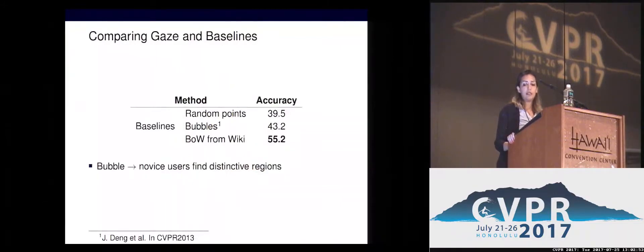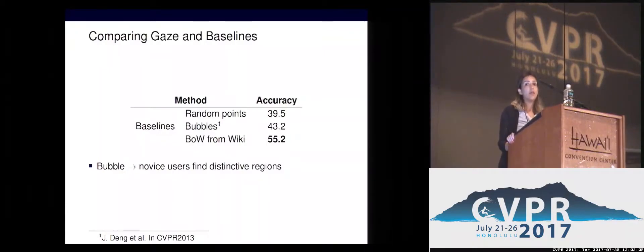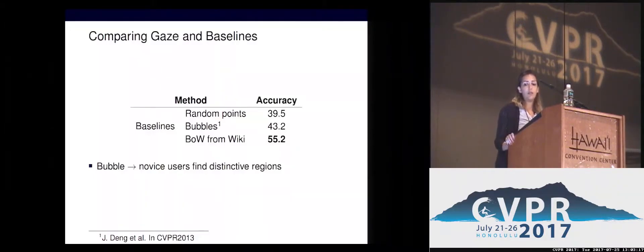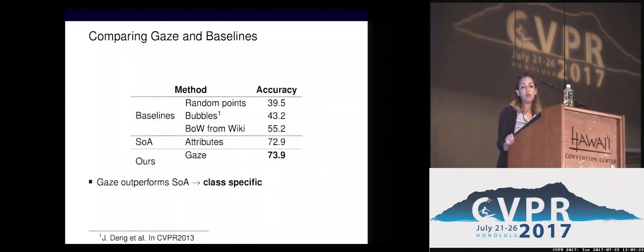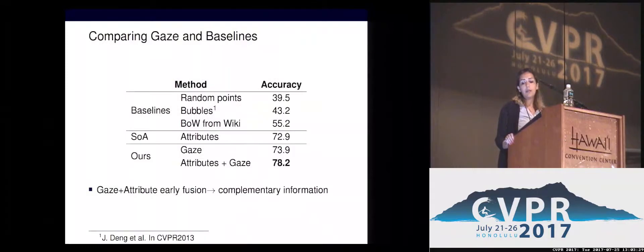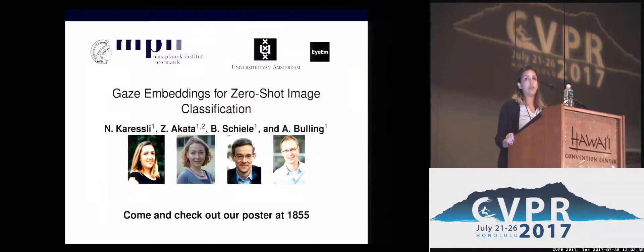We compare to different baselines: random points in the images, and also Bubble, which is mouse clicks data collected from the crowd imitating the gaze data, and bag of words extracted from Wikipedia pages describing each category. Bag of words performs the best, but bubbles improve over random points, supporting our intuition that novice users can find discriminative regions. Our gaze outperforms attributes, the state of the art, with a small set of classes, and combining it with attributes improves the results, indicating complementary information.